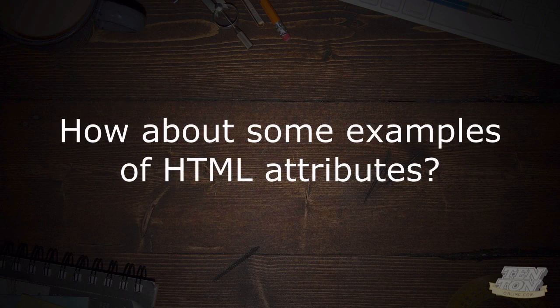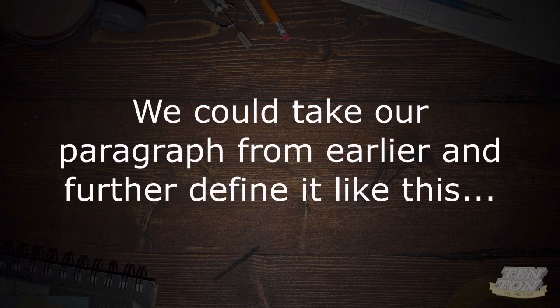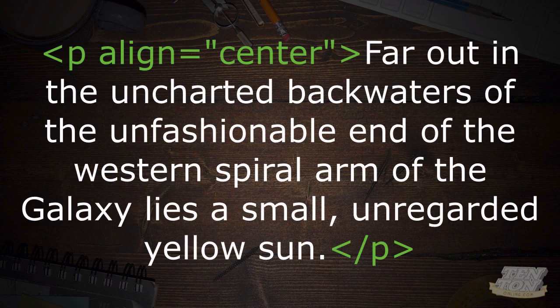Here are some examples of HTML attributes. We can take our paragraph from earlier and further define it — maybe change its alignment to center. The attribute appears in the opening paragraph tag, specifying the property 'align' and in quotes a value of 'center'. Note that this alignment method is actually outdated — these days we would use cascading style sheets — but this is just for educational and demonstration purposes to show what an HTML attribute looks like and how it's structured.